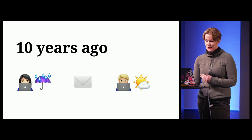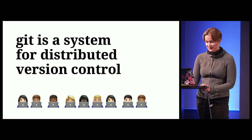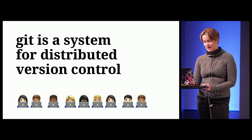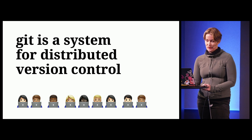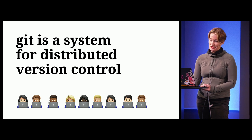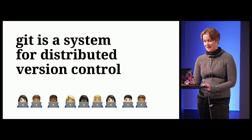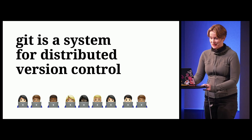And this brings us to the very core of what Git is. Git is a system for distributed version control, making it easier for multiple humans at different computers to work together on developing software over time. And when I say make it easier — we don't always feel that way about Git.